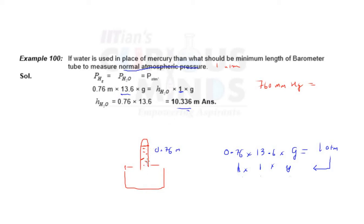So it's better to use mercury, which only needs 0.76 meters of height, which is achievable. That's why we don't use water in barometer. Some people ask why don't we use water, so this is the reason. Because the water has very less density, the higher density the lesser will be the height.